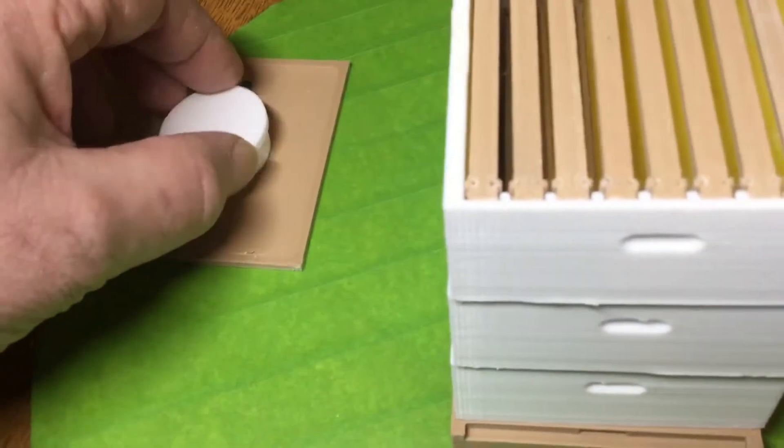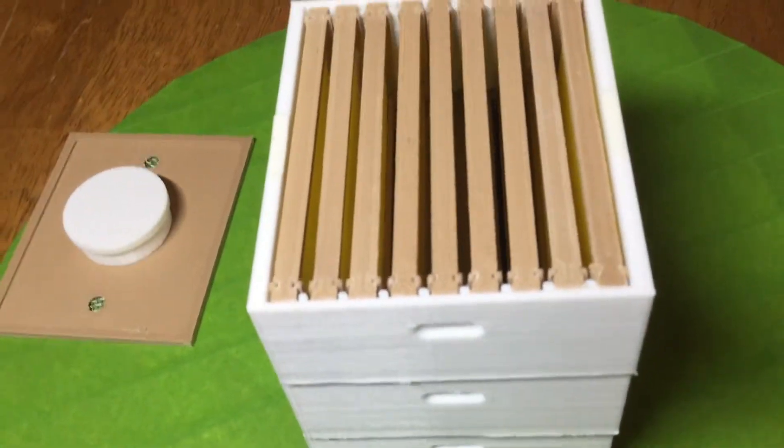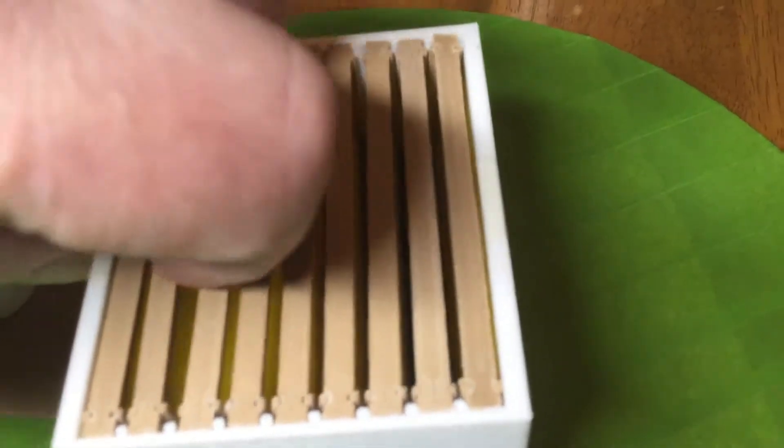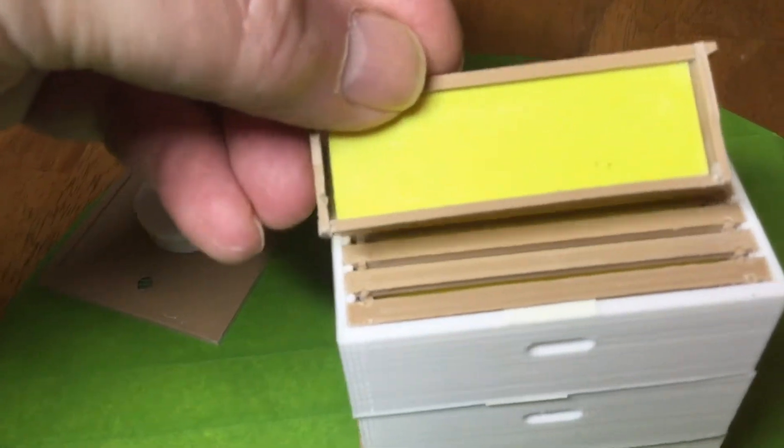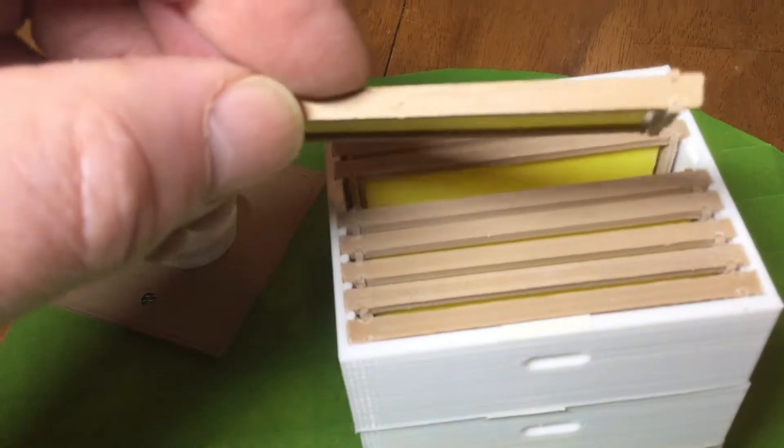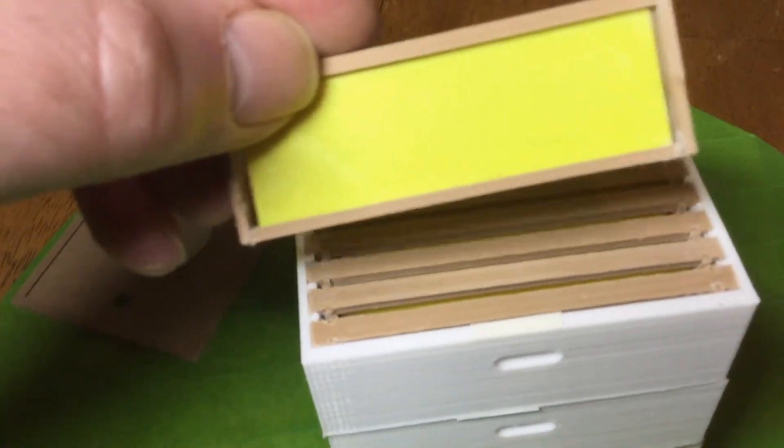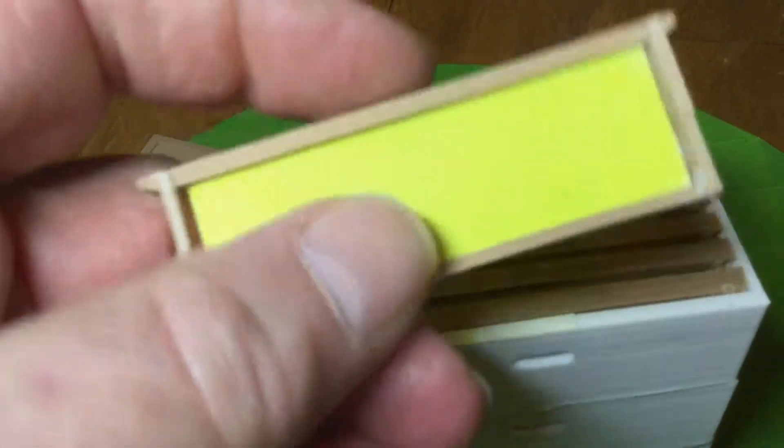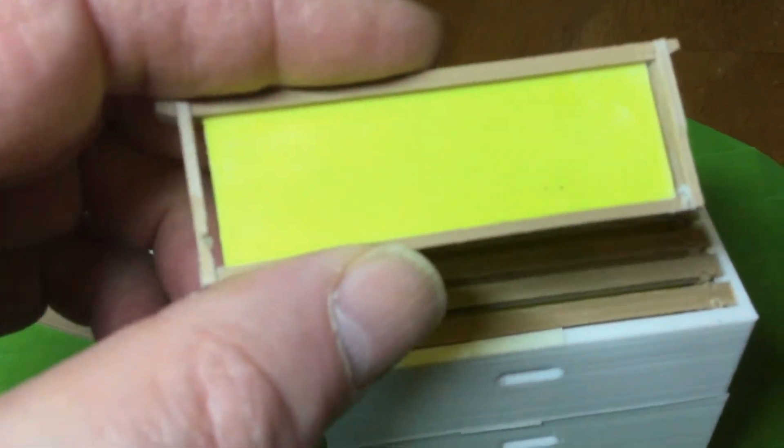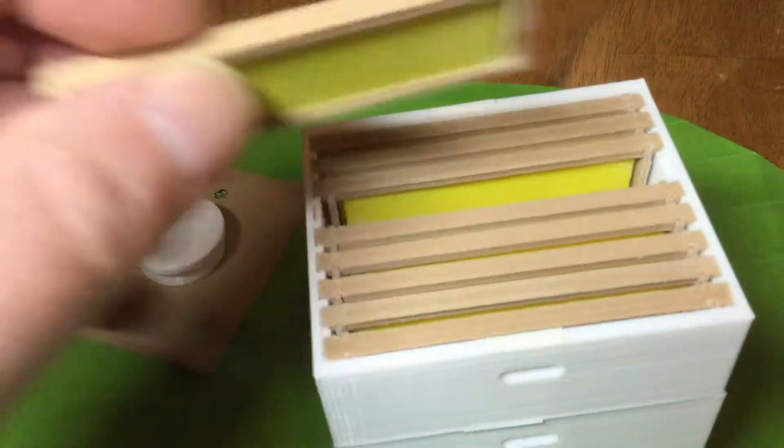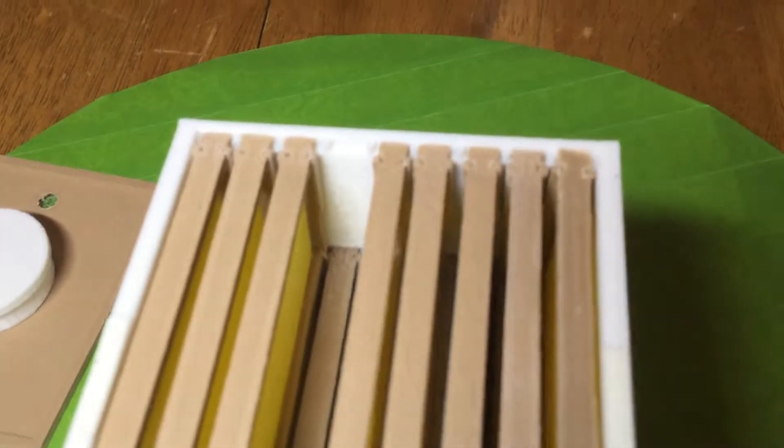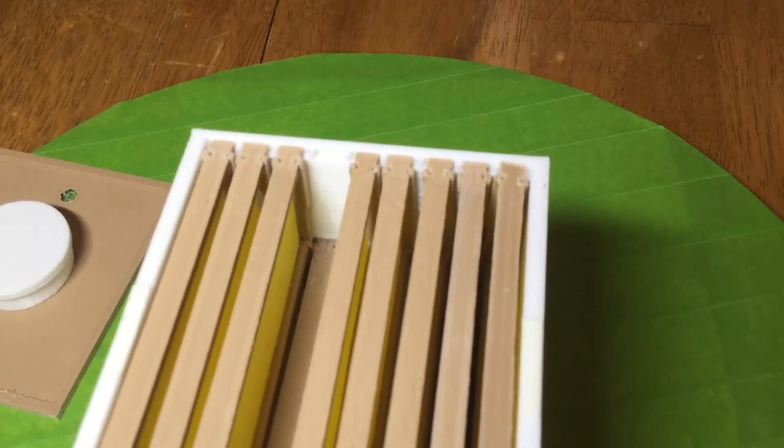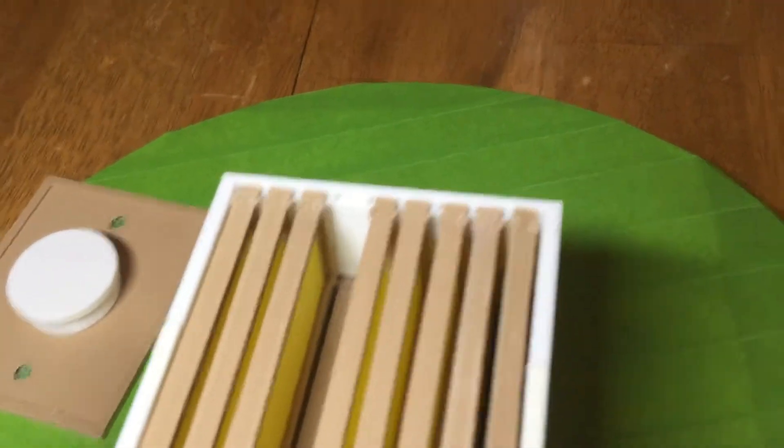So inside the boxes I have made individual frames and these frames are made up of five parts: there's the top bar, the bottom bar, the two end pieces, and a plastic flat foundation. And if you look at the way I've made this top box you can see I have dividers in there so this is actually a nine frame honey box on the top.